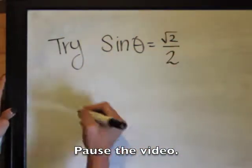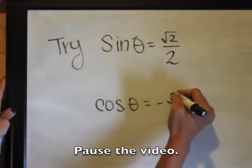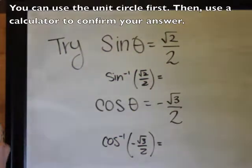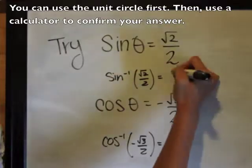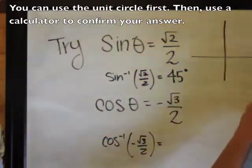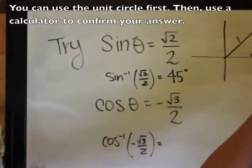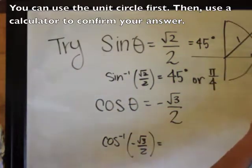Now I want you to pause the video and try these two questions, either using a calculator or unit circle. Using our unit circle, sin θ = √2/2, which means the opposite length has to be positive √2/2. That happens in quadrant 1 when θ is π/4 or 45°.